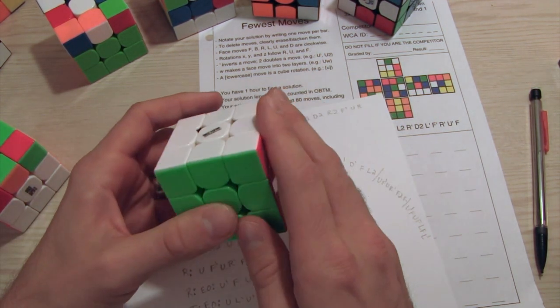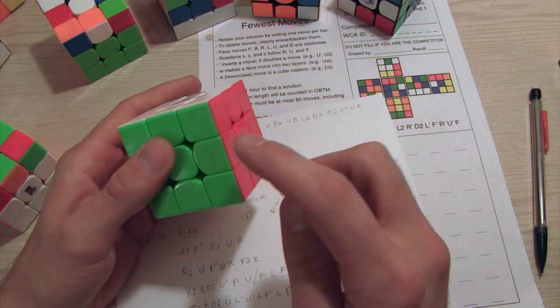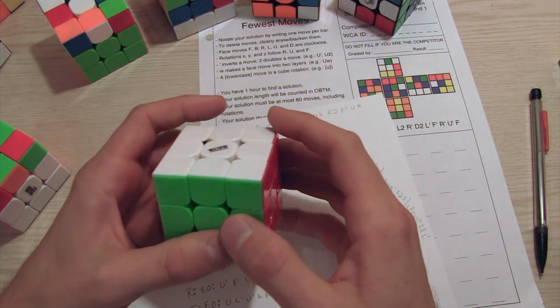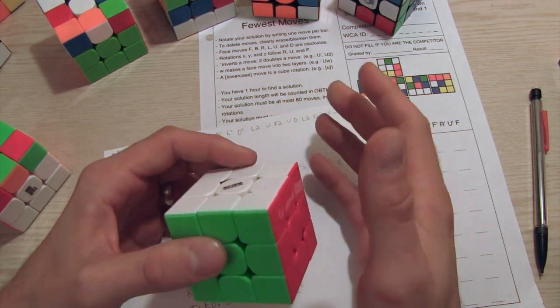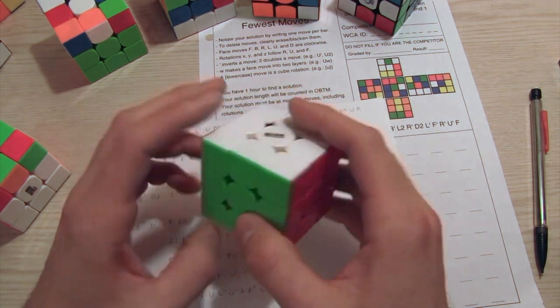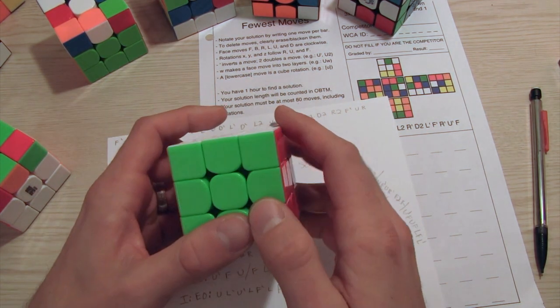So I'm going to tell you how to find commutators intuitively. You can use commutators for edges as well, but edges are not as efficient for FMC. But you still can use them anyways, and use the exact same technique. Here's how the technique will work.